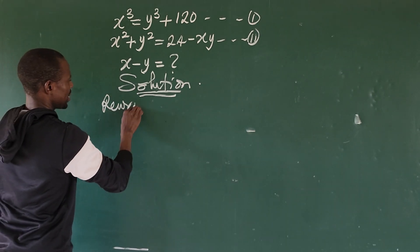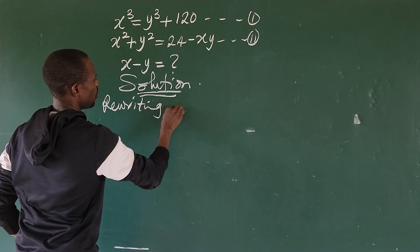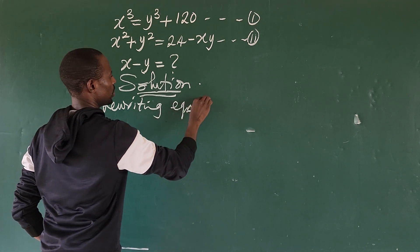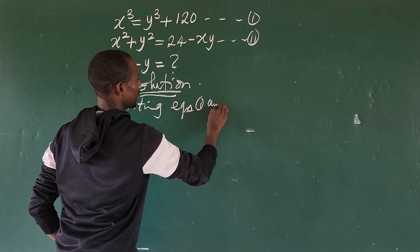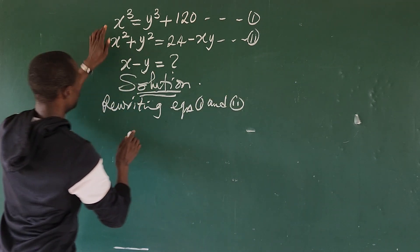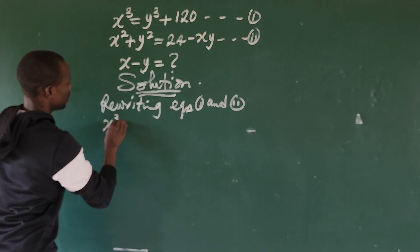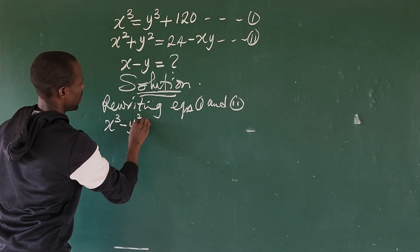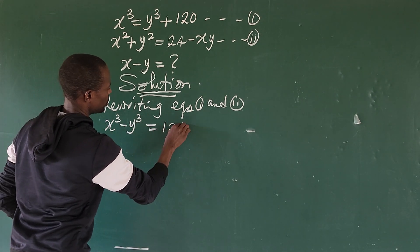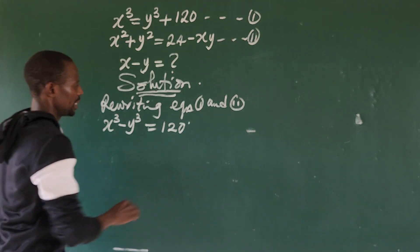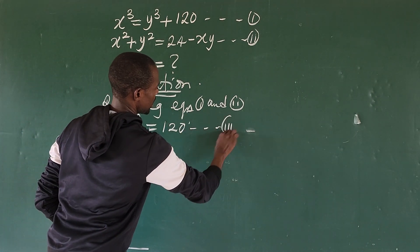Rewriting equation one gives us x³ - y³ = 120. Let's give this equation three.